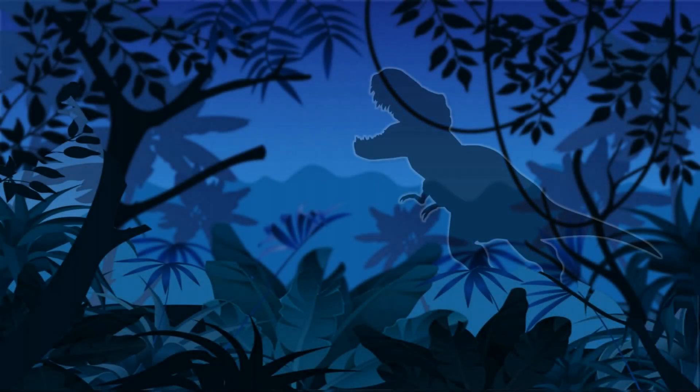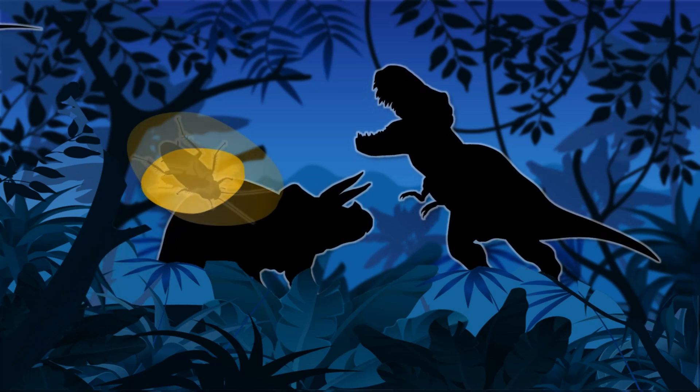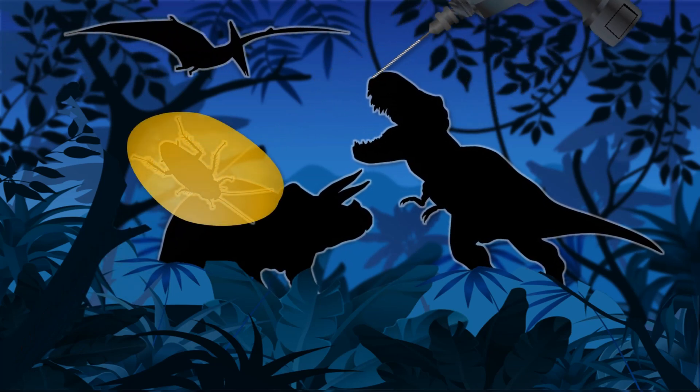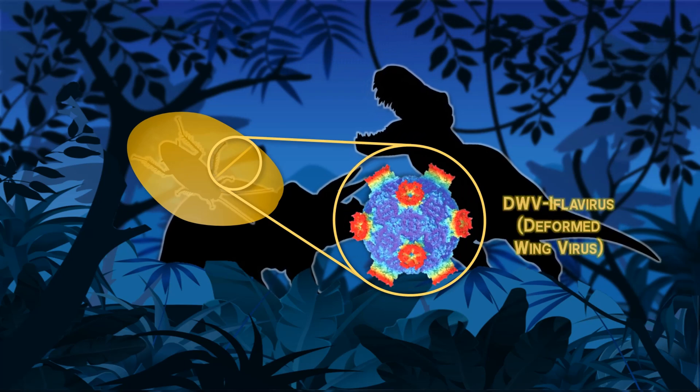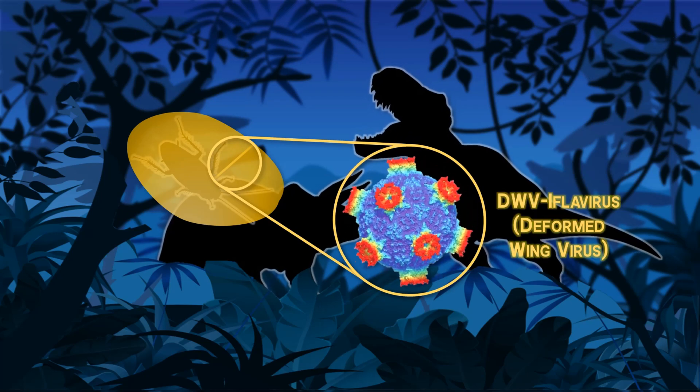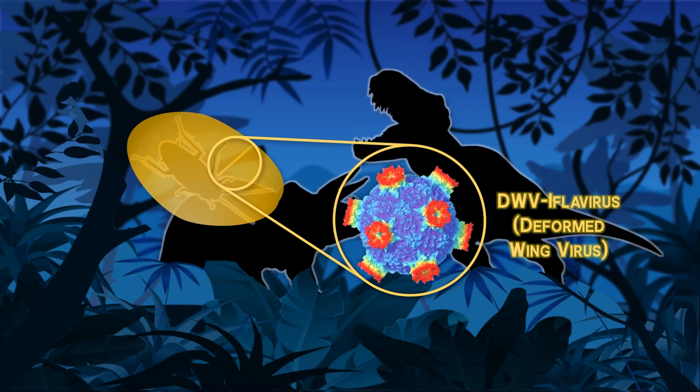Viruses have been prevalent throughout history. Recent scientific research has proven that cockroaches preserved in amber from the Cretaceous period had the DWV or the deformed wing virus in them, which leads to underdeveloped wings.